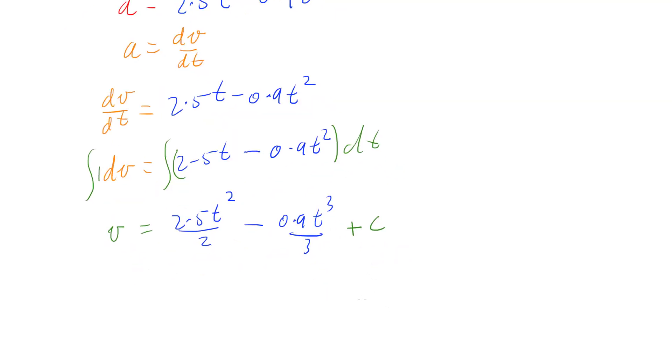And so we can tidy up our velocity expression now. We've got v equals 2.5 over 2 is 1.25t squared minus 0.9 over 3 is 0.3t cubed. And we've got plus c.